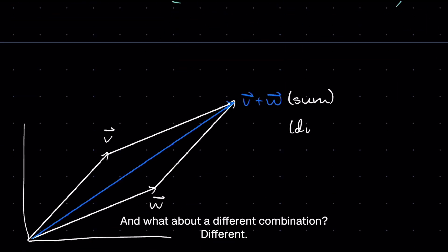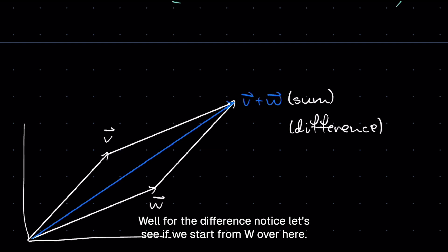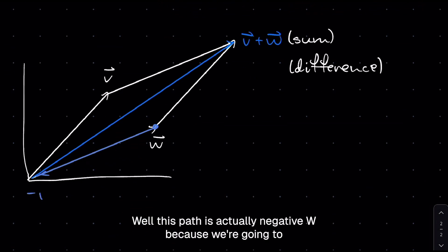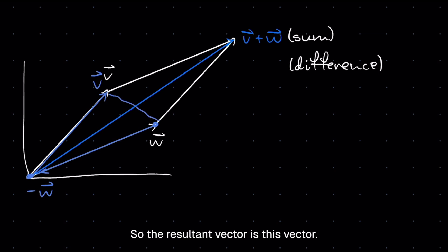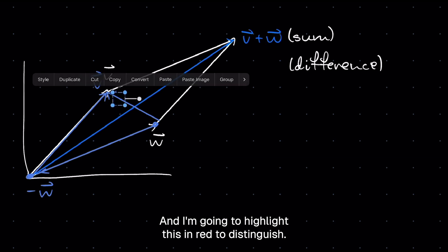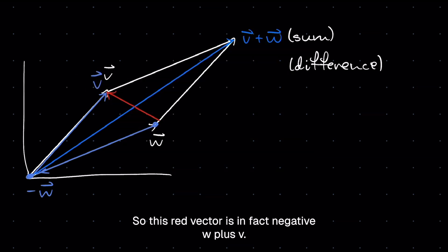And what about a difference combination? Well, for the difference, notice, let's see. If we start from W over here, let's say we start from W, and we go towards this path. What is this path? Well, this path is actually negative W because we're going in the opposite direction of the normal W, which points in this direction. And after we go over here, which is at the origin, let's go vector V up. So we're going V up. So the resultant vector is this vector, and I'm going to highlight this in red to distinguish. So this red vector is, in fact, negative W plus V, which is V minus W.